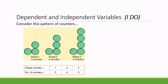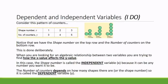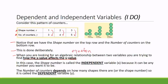If I draw that up in a table, the top row is the shape number — one, two, three — and the second row is the number of counters: three, four, five. I've done that deliberately. When you are looking for an algebraic relationship — an equation or a rule — between two variables, you are trying to find how the x value affects the y value, so how the shape numbers up here affect the counter values down there.